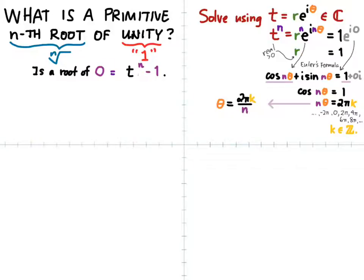Once we find out that theta must be 2 pi times any integer k divided by n. Putting these pieces all together, we find out that zeta n, our n-th root of unity, has to have the form 1 times e to the i times 2 pi k over n, where k is any integer we like.